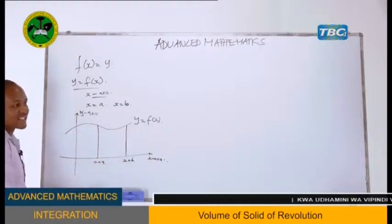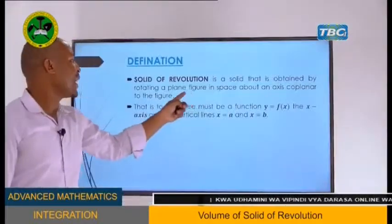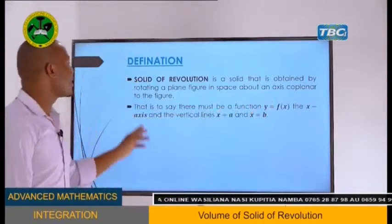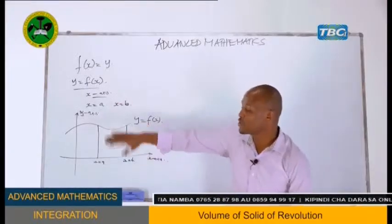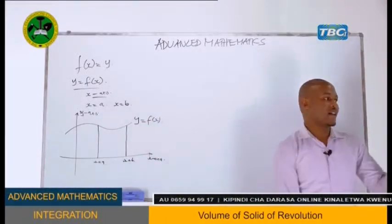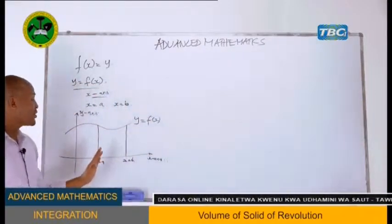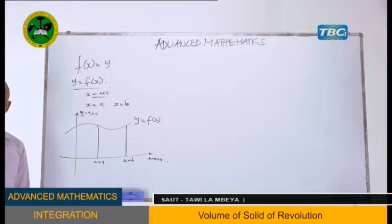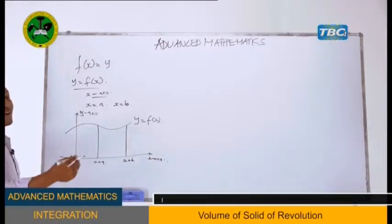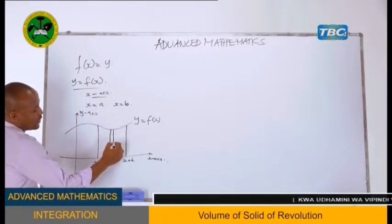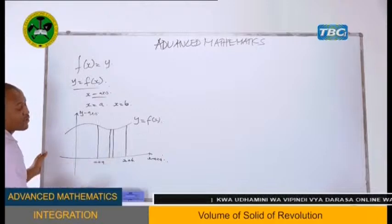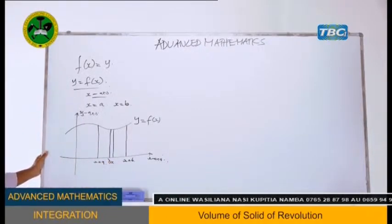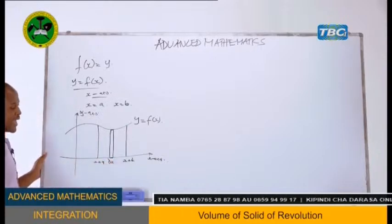A solid of revolution is a solid obtained by rotating a plane figure about the x-axis. We are going to find the volume of that solid of revolution from point a to point b. Consider a very small change in x along the x-axis — this forms a rectangle, where dx is the small change and that is the height of our rectangle.